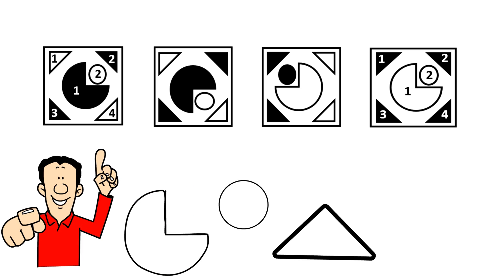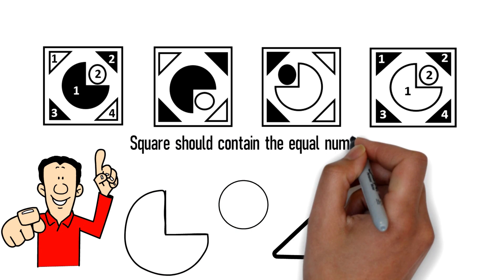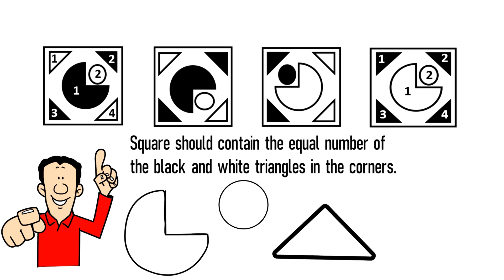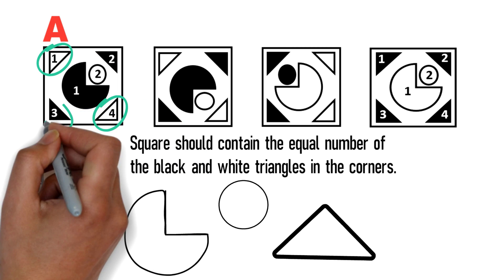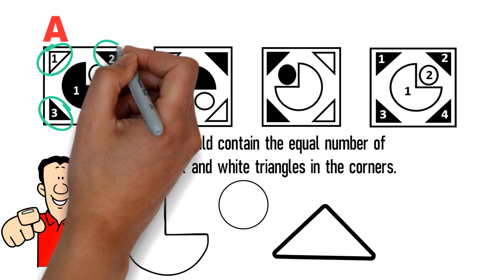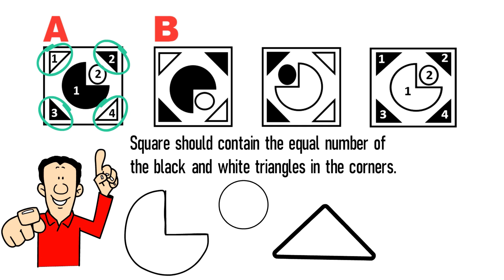There are some sophisticated questions on the test which might include patterns for both shapes. In this particular case, the pattern is that the square should contain an equal number of black and white triangles in the corners. Triangles in square A are positioned diagonally across each other — white triangles in the upper left and bottom right corners, and black triangles in the bottom left and upper right corners. The same pattern exists in shape B — two white triangles and two black triangles. And in shape C — two black triangles on the left and two white triangles on the right.